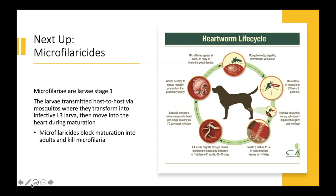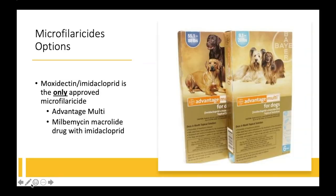Microfilaria are larval stage 1 and are microscopic. The larvae are transmitted host-to-host through mosquitoes, where they transform into infective L3 larvae and move into the heart during maturation. Microfilaricides block maturation into adults and kill the microfilaria. The only approved microfilaricide is moxidectin mixed with imidacloprid — Advantage Multi — which has it on label as the only approved microfilaricide.